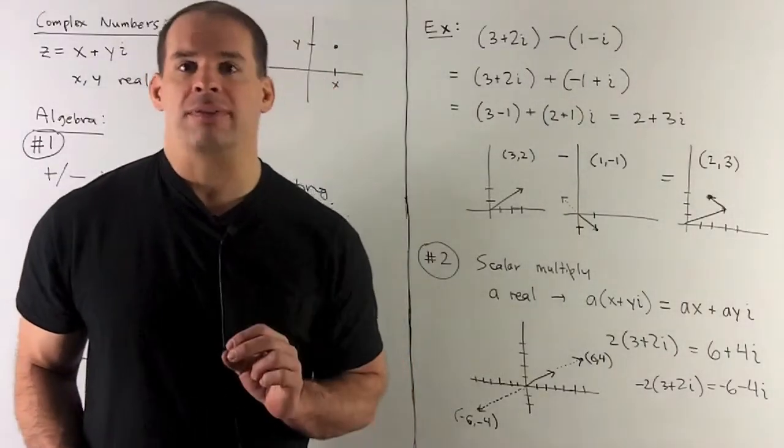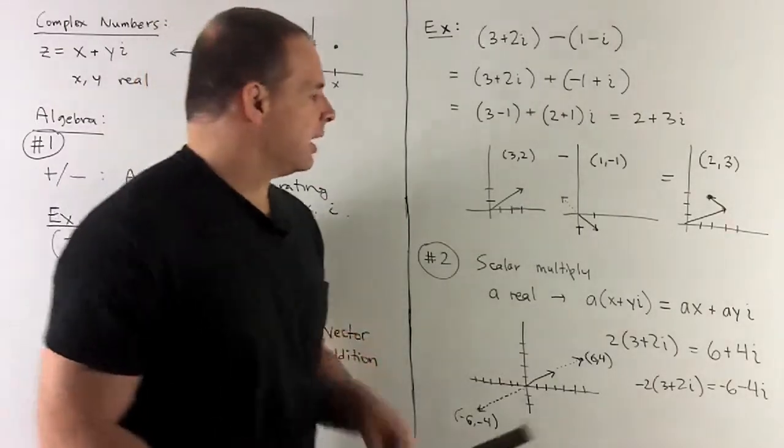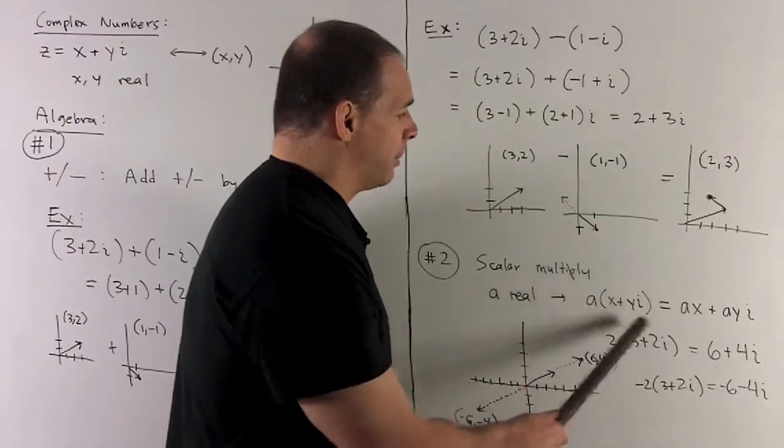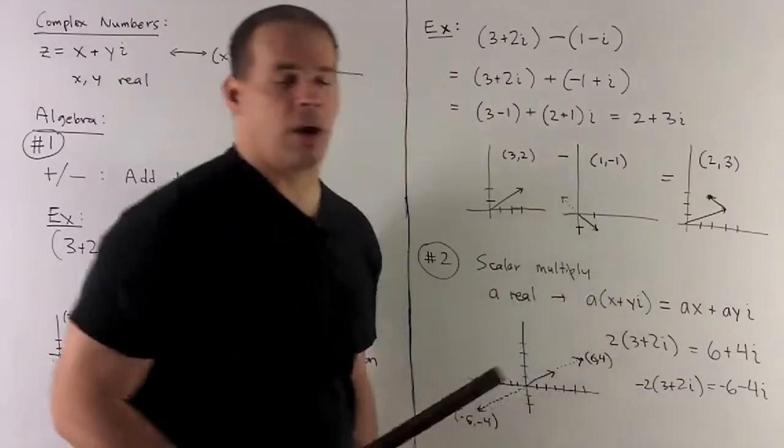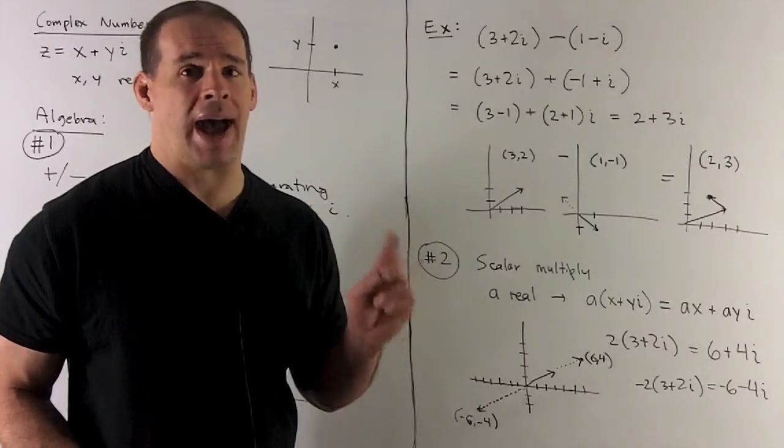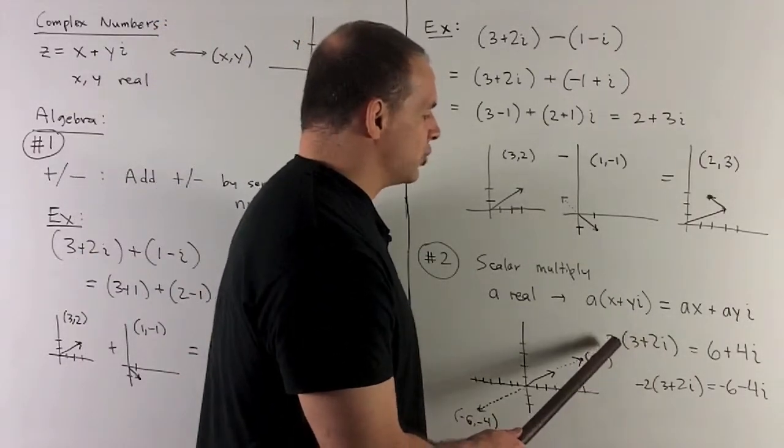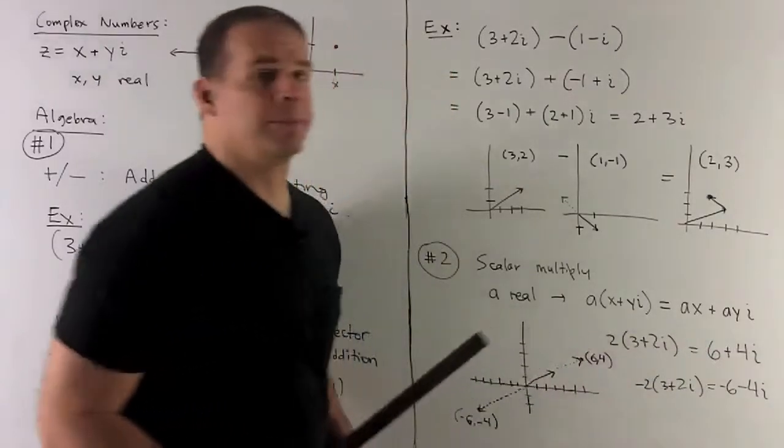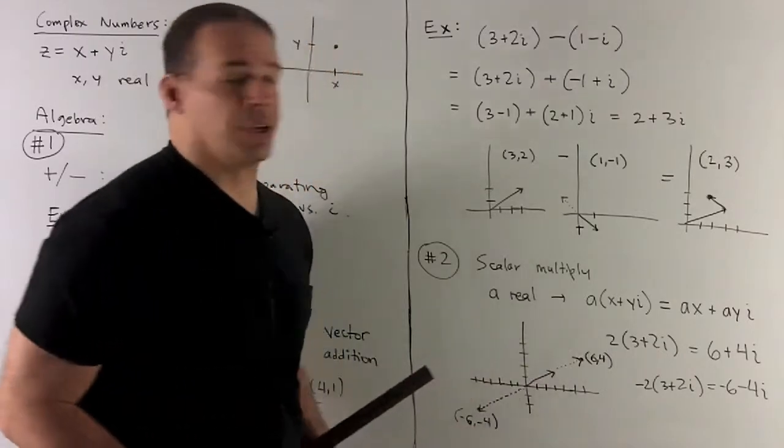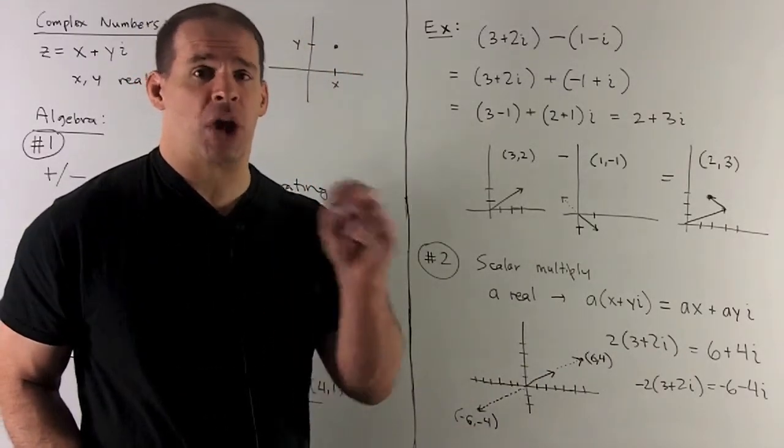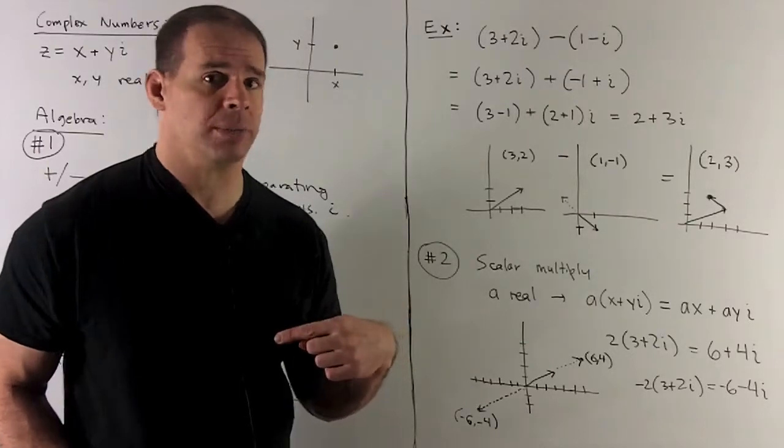Second big property, another vector property. This is scalar multiplication. So all this says, and I actually used it in part 1 when I did the difference, if I have a real number and I multiply my complex number by that real number, it's just going to be multiply that number on each piece. So if I take a on x plus yi, I'm going to get ax plus ayi. On an example, we could take 2 times 3 plus 2i. So the net effect is just 2 on the 3, 2 on the 2 gives me 6 plus 4i. What's that do in our picture? If I have over 3 up 2, that's just going to stretch this by a factor of 2.